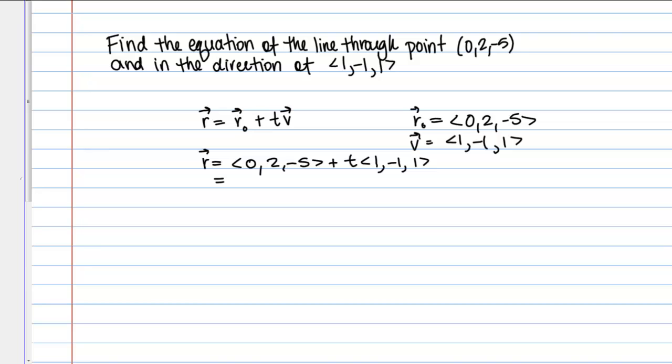We could leave this in this form, or we could combine these vectors. If I were to combine these vectors, it would look like this. The first component would be 0 plus 1T, and then 2 minus 1T, and then -5 plus 1T. Or I could write that as <T, 2-T, -5+T>.